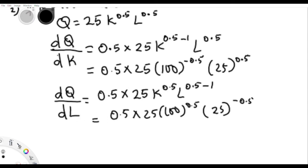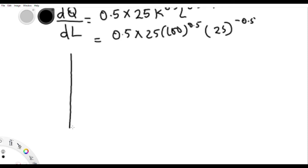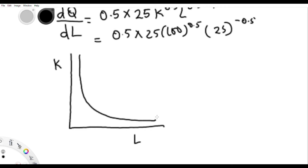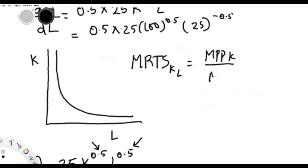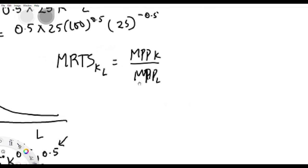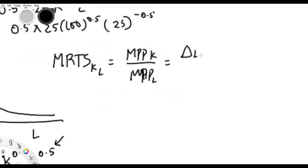The next question: if K is the vertical axis and L is the horizontal axis, what is the marginal rate of technical substitution? MRTS of K for L equals MP_K over MP_L, which also equals the change in L over the change in K. We already calculated these in the previous question, so just substitute them in to get the answer.